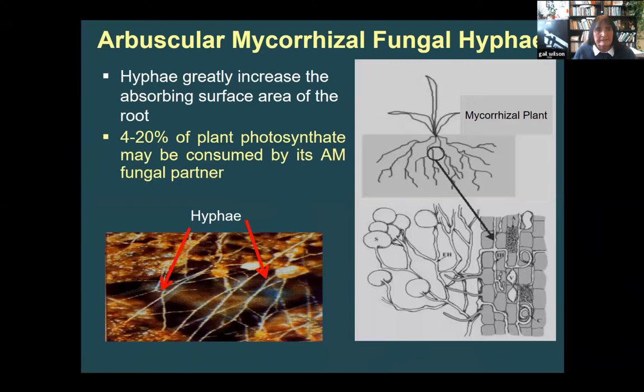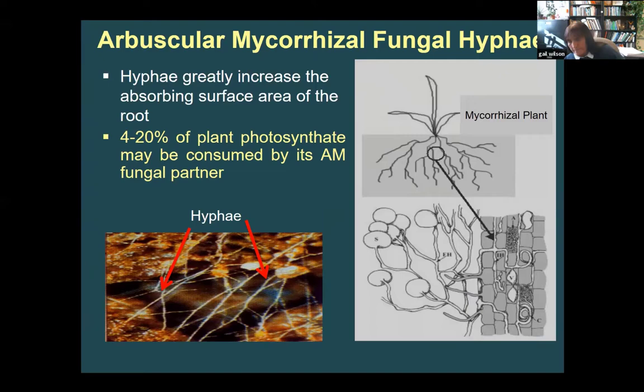The reason for that is because they have hyphae that extend out and bring back nutrients — especially phosphorus, which is fairly immobile in the soil — but also nitrogen, some micronutrients, and in some cases water. So the plant is dependent on the fungi for nutrient uptake. In exchange, these fungi are 100% dependent on the plants because they get all of their carbon from the plant. The plant shares its photosynthate.